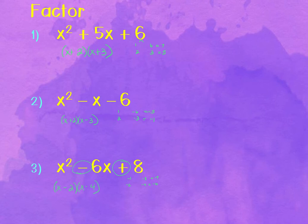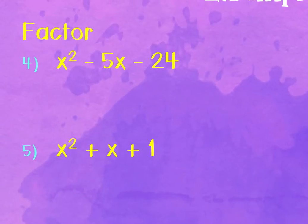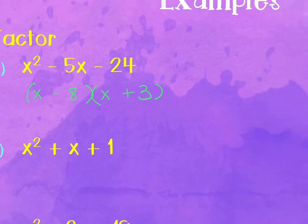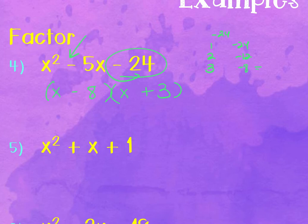Student question: is the x irrelevant? Not irrelevant — when finding the factor pairs you focus on the numbers, but you'd get the x back when you multiply out. For problem 4, factors of negative 24 that sum to negative 5: positive 3 and negative 8. So positive 3 and negative 8 gives the answer, meaning the factors are (x + 3)(x − 8).